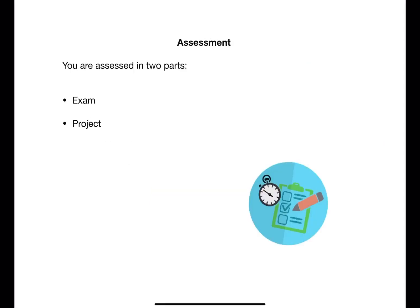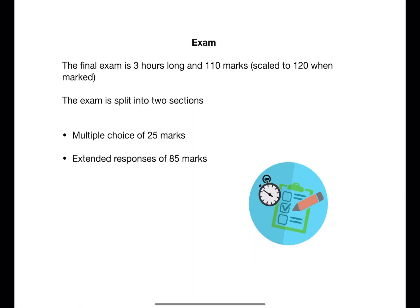The formal SQA assessment is split into two parts: an exam and a project. The final exam is three hours long, has 110 marks, and is split into two sections: 25 multiple choice questions followed by 85 marks of extended response questions.